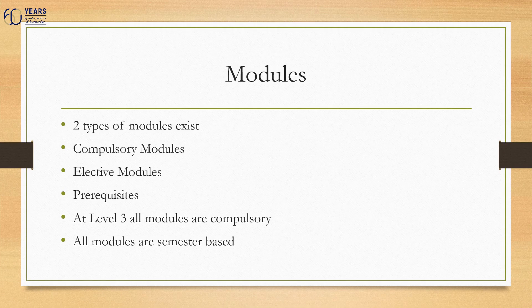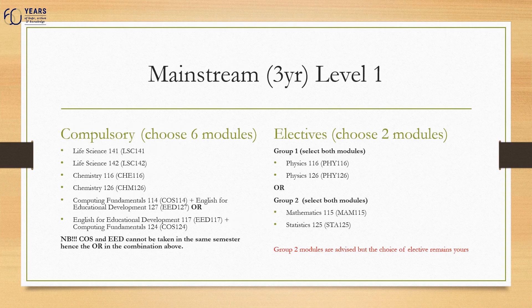At level three, all modules are compulsory. At the mainstream three-year degree course, at level one, you must select eight modules, of which six are compulsory and two others are electives.